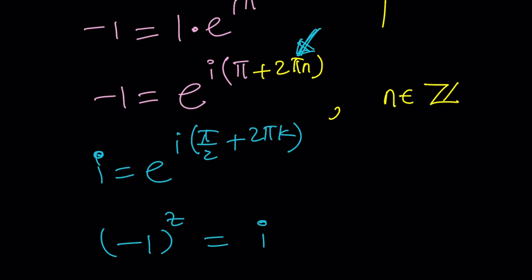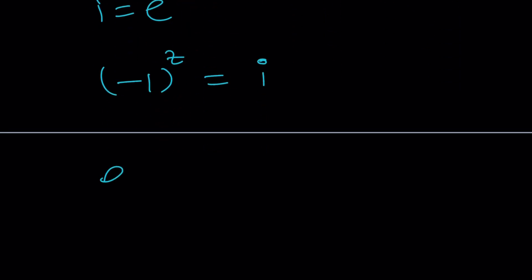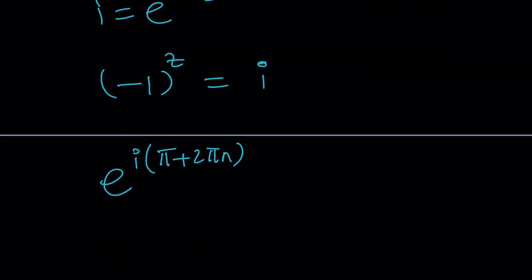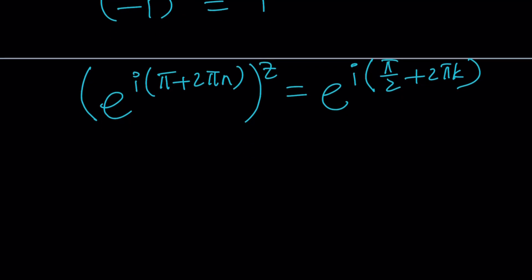So now we can just go ahead and plug in everything. Negative 1, I'm going to write it as e to the power i times pi plus 2 pi n. I'm going to use my integer n. And k is an integer too. Now we're going to raise this to the power z, and it's going to equal i, which I wrote as e to the power i times pi over 2 plus 2 pi k. I didn't want to use the same integers because they don't have to be the same. Now, this is pretty good because I got the exponentials on both sides, and now we can simplify this. Let's go ahead and multiply by z, e to the i z times pi plus 2 pi n equals e to the power i times pi over 2 plus 2 pi k.